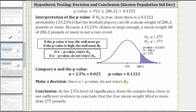Our final conclusion is: at a 2.5% level of significance, from the sample data, there is not sufficient evidence to conclude that the true mean weight lifted is more than 275 pounds. I hope you found this helpful.